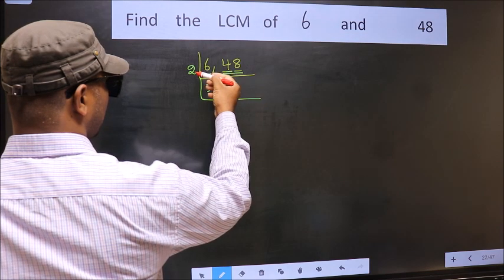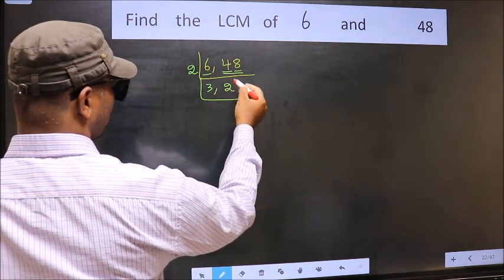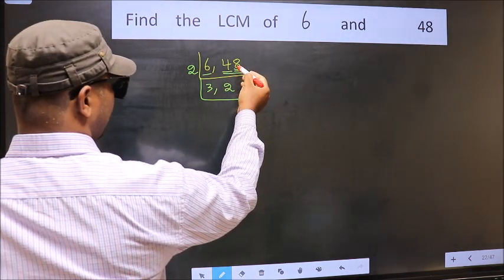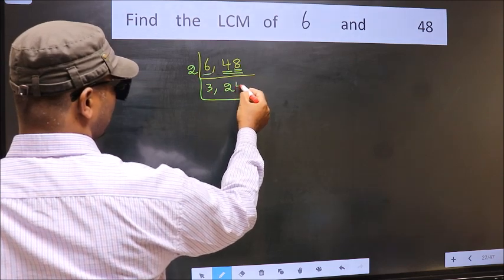First number 4, when do we get 4 in the 2 table? 2 times 2 is 4. Now the other number 8, when do we get 8 in the 2 table? 2 times 4 is 8.